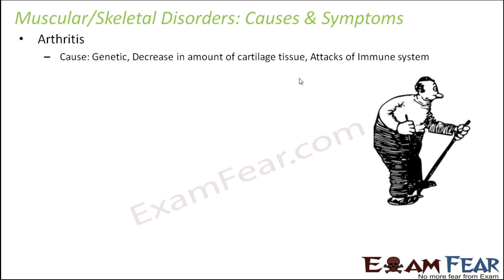When the immune system attacks the synovium — which forms the synovial fluid — if that synovial fluid is affected and no more synovial fluid gets secreted between the bones and the joints, the synovial joints will not be able to function properly and flexibility will reduce. This will start to damage both the bone and cartilage in the joint. This type of arthritis is known as rheumatic arthritis, and in its severe form it can be fatal.